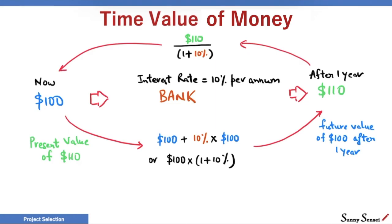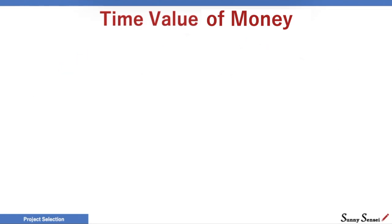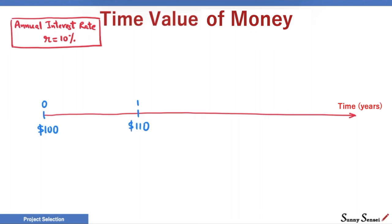Let's see what happens if we go further in the future. We have time on the x-axis. We will start with the present, time zero. We have $100. Again, we deposit this amount in a bank that offers 10% annual interest. We end up with $110 after one year. Multiplying $100 with 1 plus 10% gives us $110.